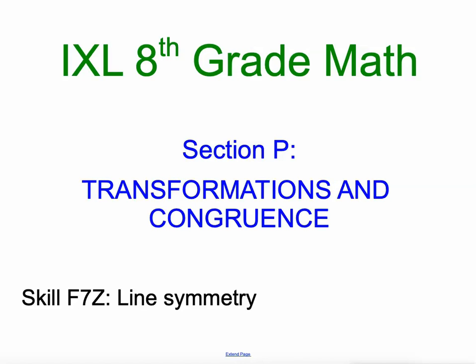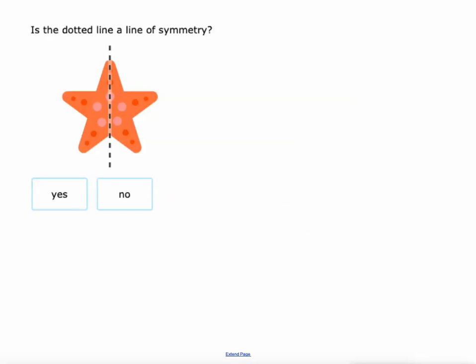Hey everyone, Mr. Kaczynski here. We're going to start section P of IXL's 8th grade math today, transformations and congruence. So we're going to start off with skill one, which is F7Z, line symmetry. Quick one today, I think you'll pick up on it rather quick.